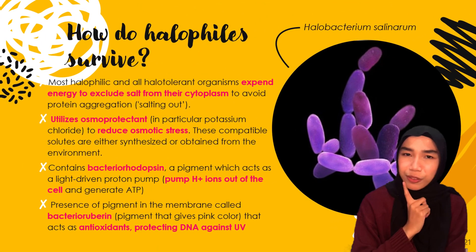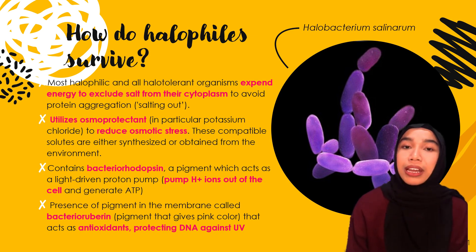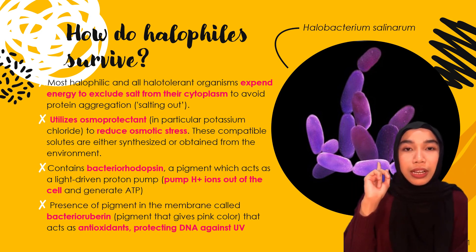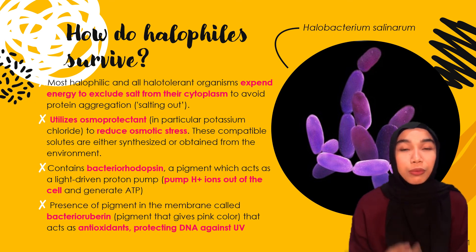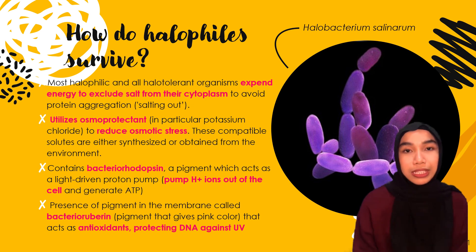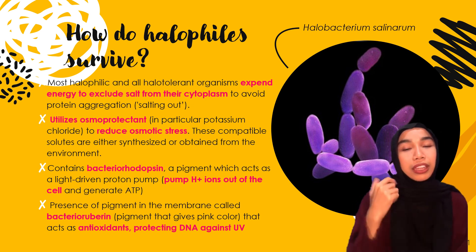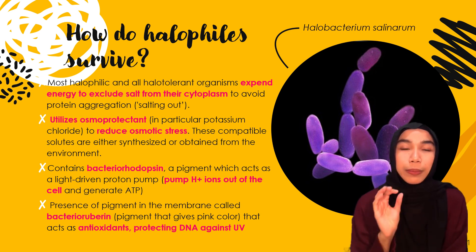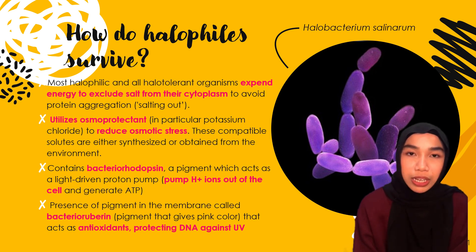Have you ever wondered how halophiles survive that extreme condition? Most halophilic and halo-tolerant organisms expend energy to keep salt out of their cells, to prevent salt aggregation, or 'salting out.' They utilize osmoprotectants — in this case, potassium chloride — which can either be synthesized or taken from the environment. They also have a pigment called bacteriorhodopsin that acts as a light-driven proton pump, helping pump hydrogen ions out of the cell.